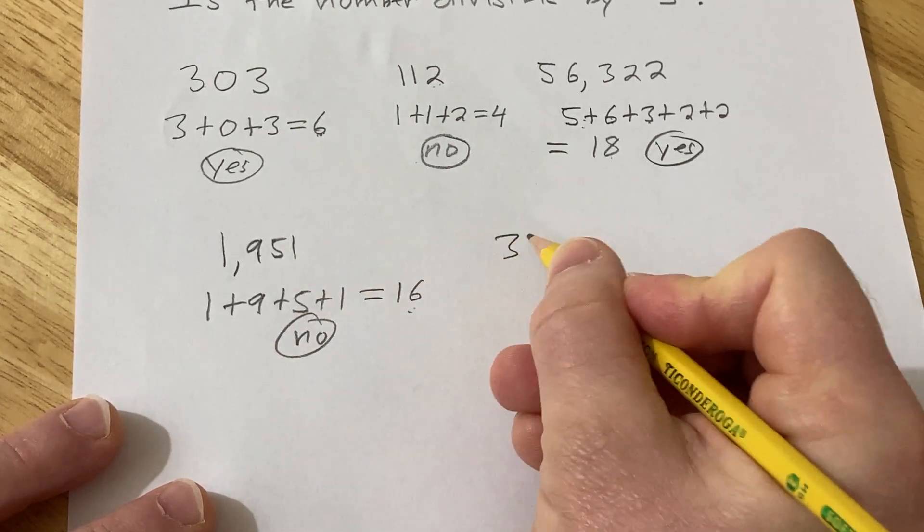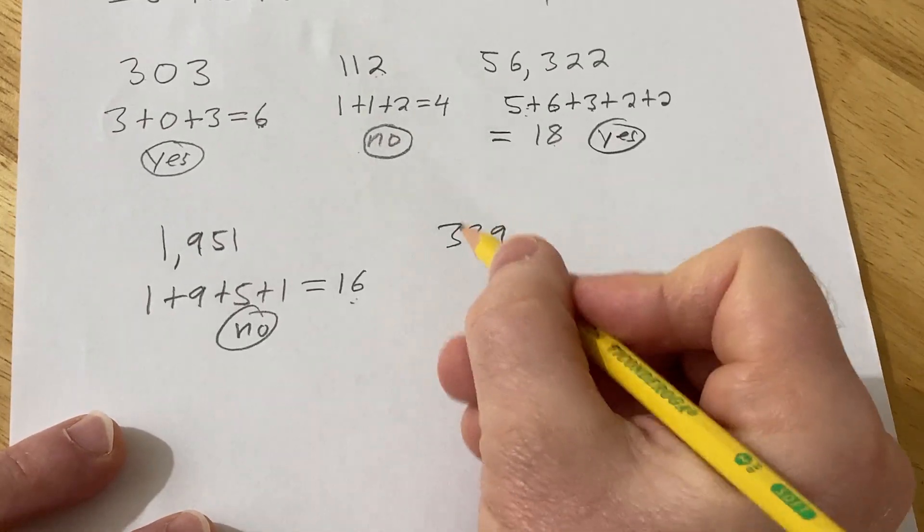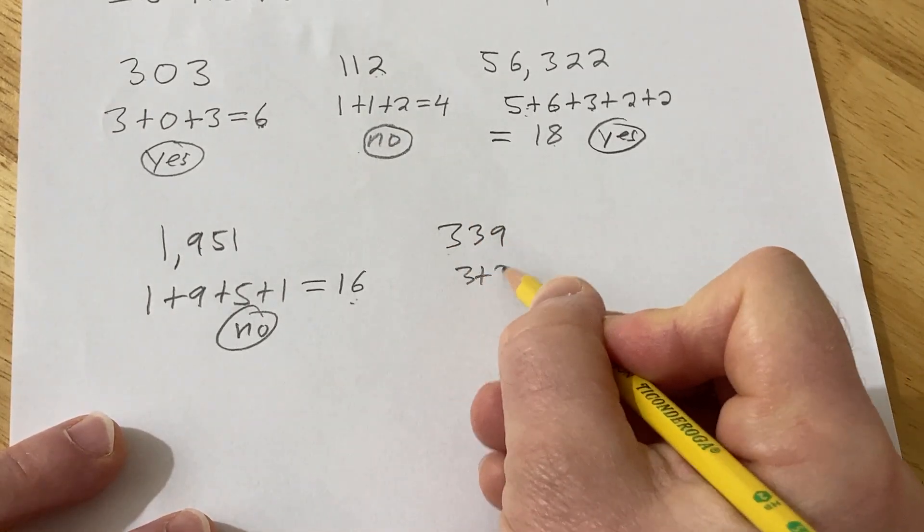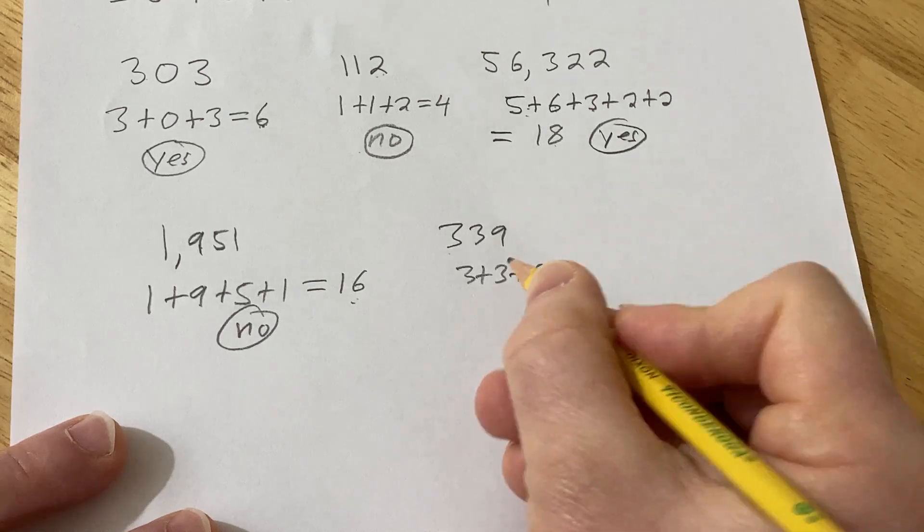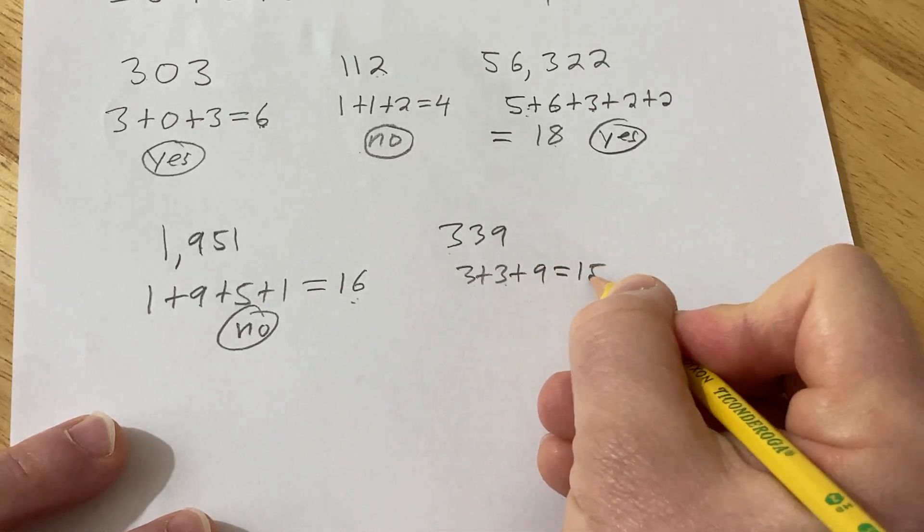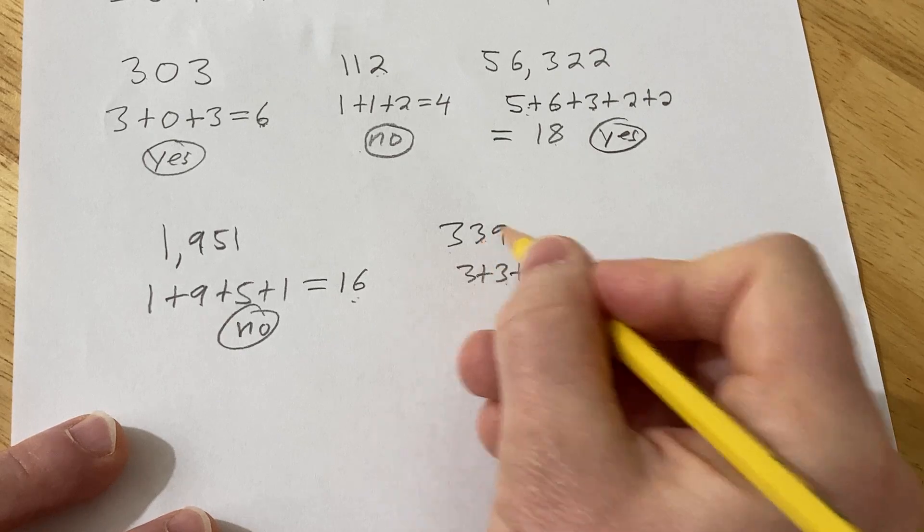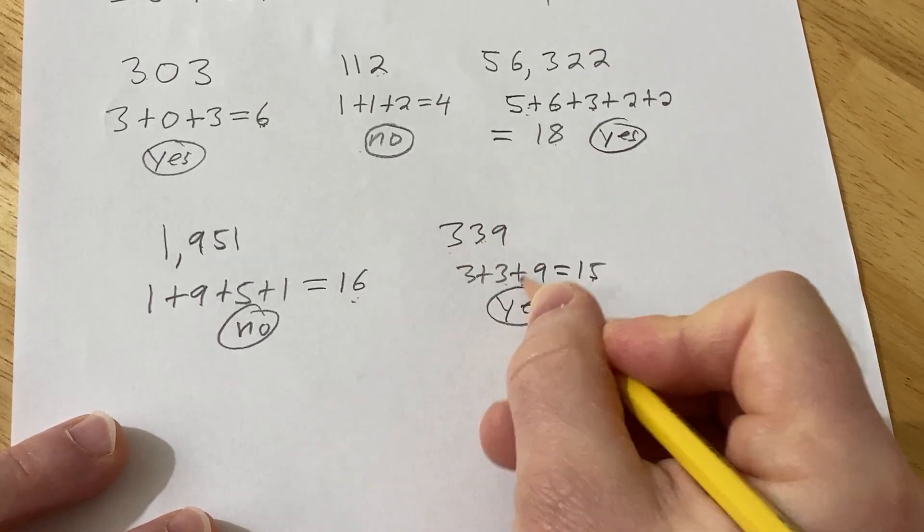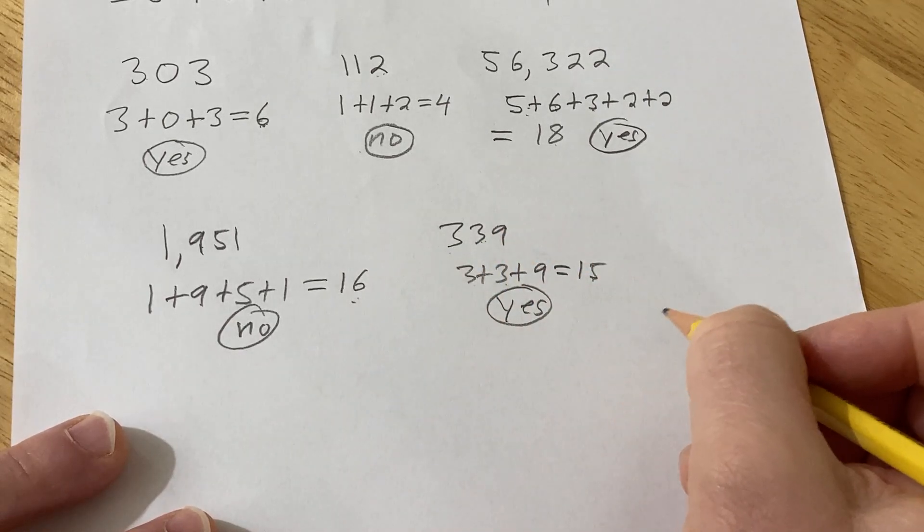How about 339? We can add up the digits. 3 plus 3 plus 9. That's going to be 6 plus 9, so that's 15. 15 is divisible by 3. Therefore, this number is also divisible by 3. So yes, 339 is divisible by 3.